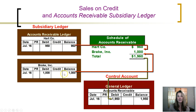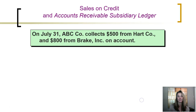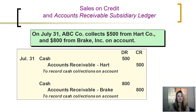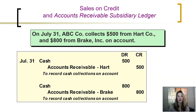At any given time, if we add up the balance in the subsidiary ledger accounts to get the total accounts receivable, it should equal the balance in the general ledger controlling account. When we receive a payment from a customer, we not only update the general ledger controlling account, but we also update the subsidiary ledger as well.